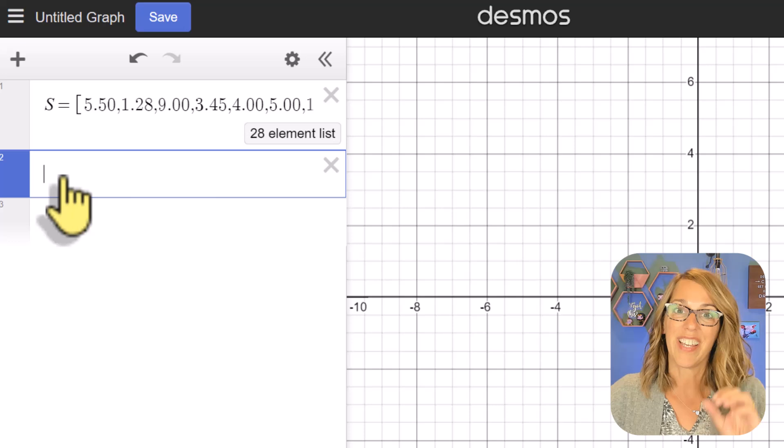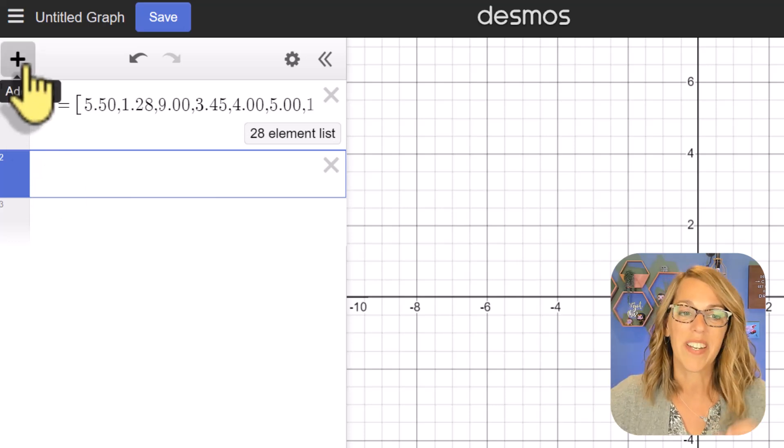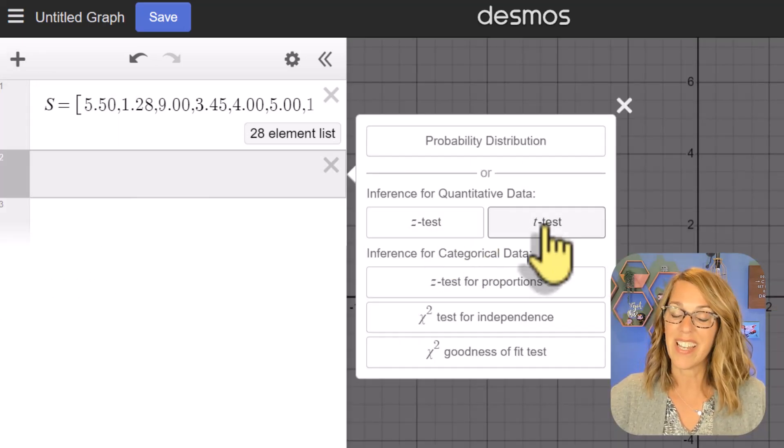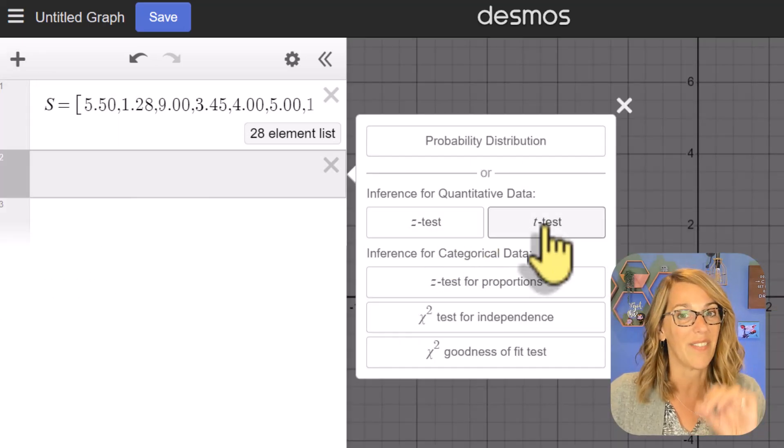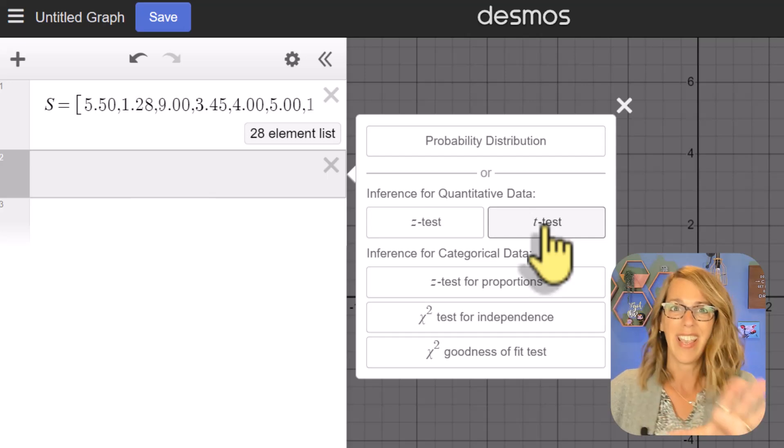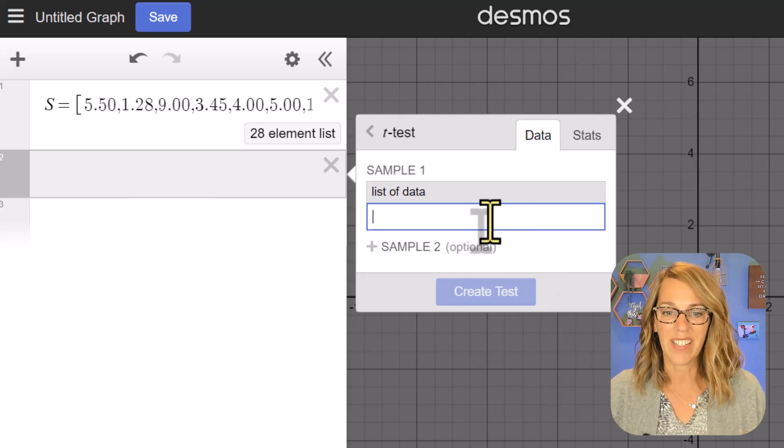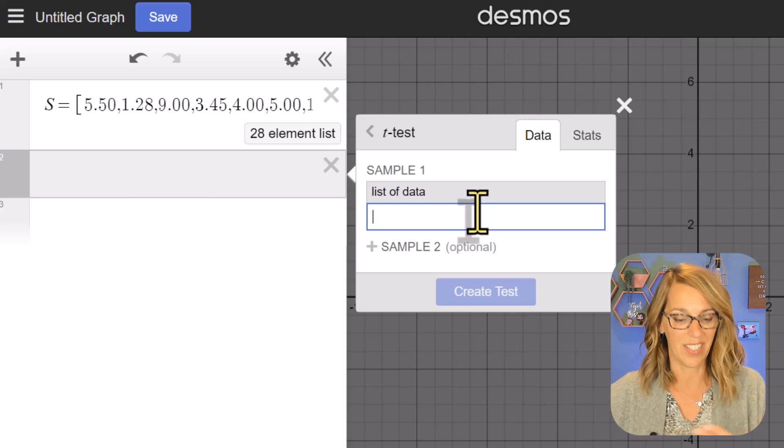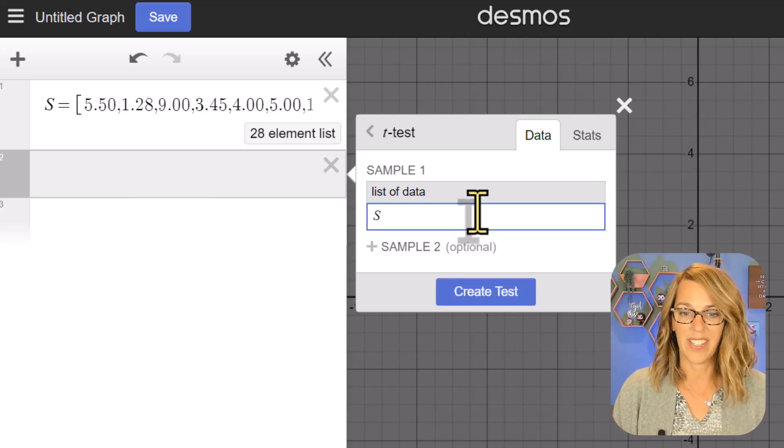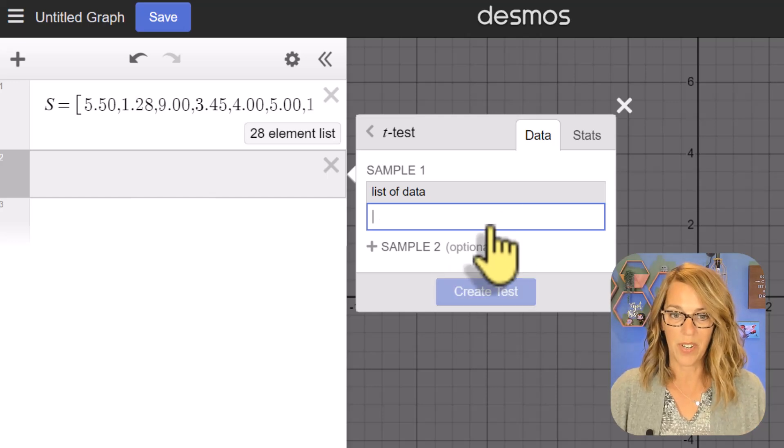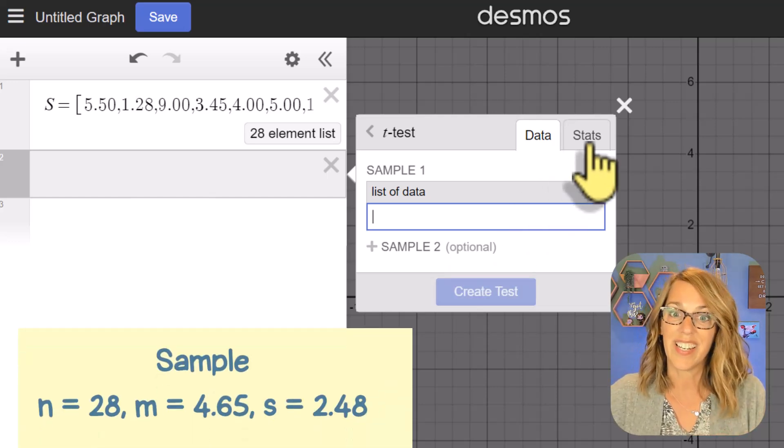Now let's put our cursor in another empty cell and we're going to bring up that inference tool. I'm going to click on the plus sign and I want inference and we do want a t-test since we just have that sample standard deviation and only 28 data values. So I'm going to choose the t-test and we're going to do it with the data list first. I would hit S here and then create test. That would be the first way to do it, but we can also do it with the statistics that we were given.